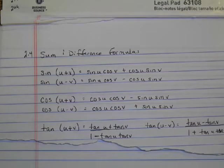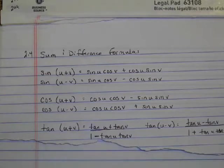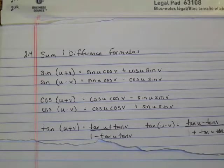In section 2.4, we're going to keep evaluating trig functions, but this time we're going to have to use the sum and difference formulas. So I've got them written down here. They're also on page 244, which is section 2.4 in the book. If you want to go look there and copy them in your notes, that'd be great.